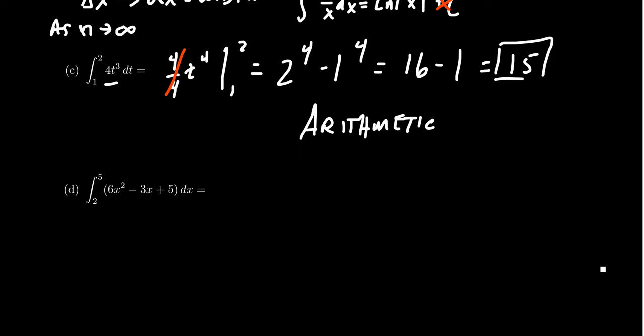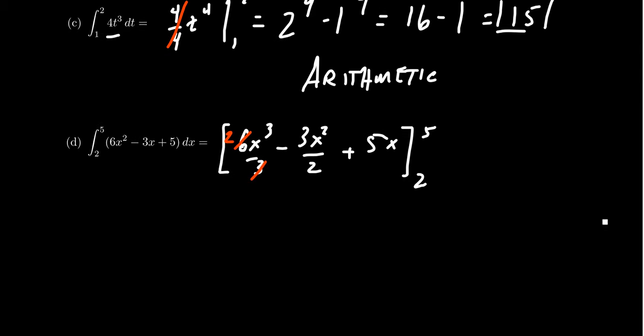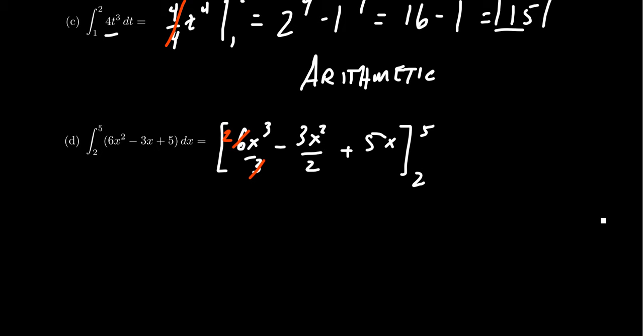So thinking of the antiderivative, the antiderivative of 6x^2, we're going to get 6x^3 over 3 by the power rule, minus 3x^2 over 2, plus 5x. We just handle this all together, and then write your limits right there, 2 and 5. Simplify your expression if you can. 3 does go into 6 two times. 3 halves, we're just stuck with that one.